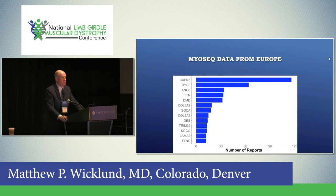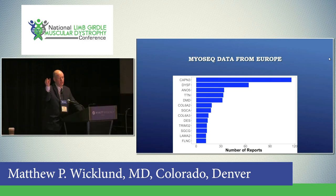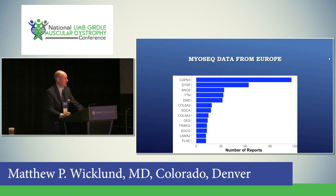Our colleagues in Europe, at the same time, were doing a similar project with over 1,000 patients. They also determined that in Europe, calpain is the most common, then dysferlin, then ANO5, titin, then the collagen disorders and sarcoglycanopathies.